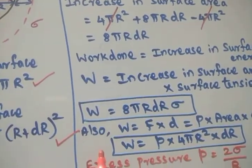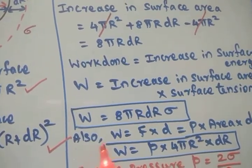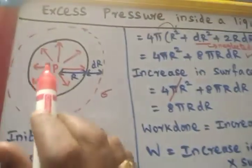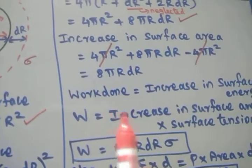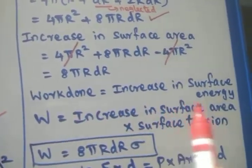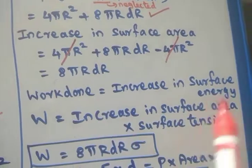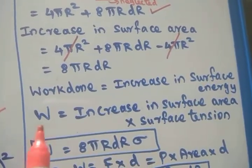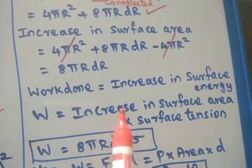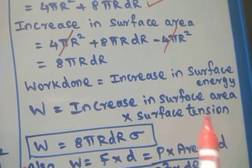The work done in enlarging the drop is equal to the increase in surface energy. That is, work is equal to the increase in surface area multiplied by the surface tension sigma.